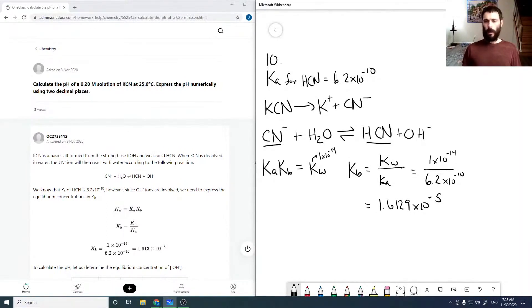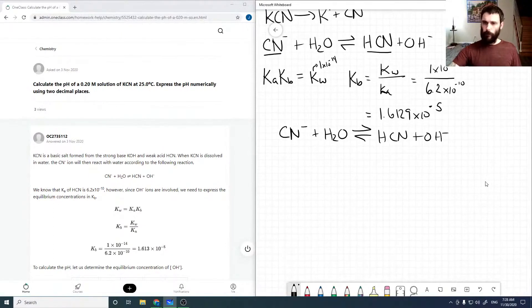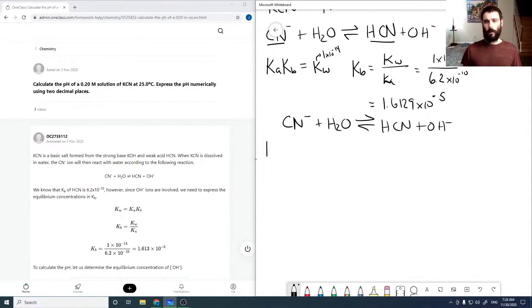Now we can use our ICE table to calculate our equilibrium. We have our initial concentration of CN minus, which we're assuming is the full concentration, 0.2, and 0 and 0. Our change is minus x, plus x, plus x.